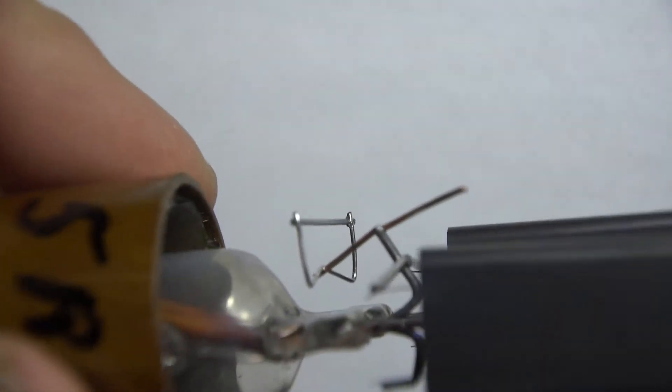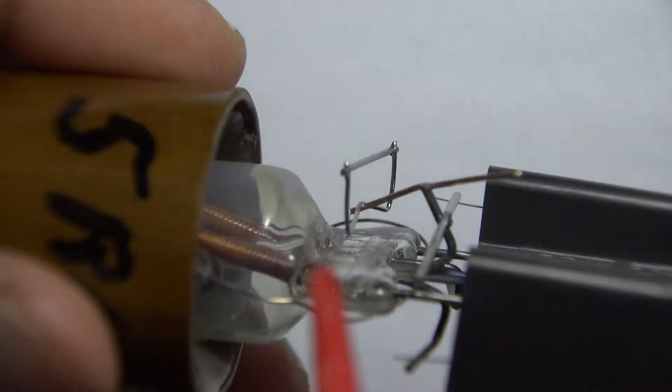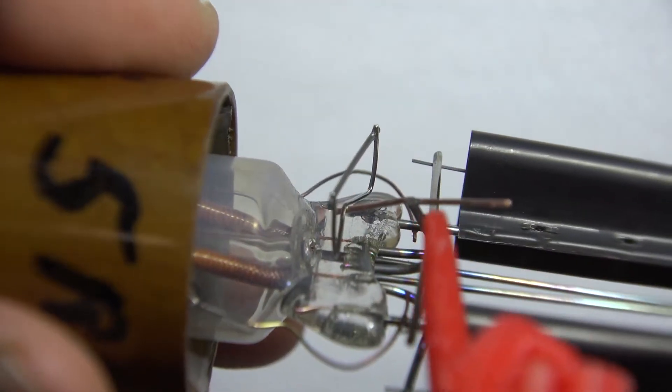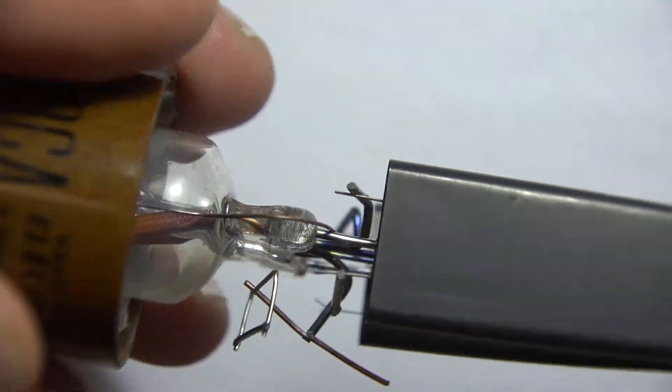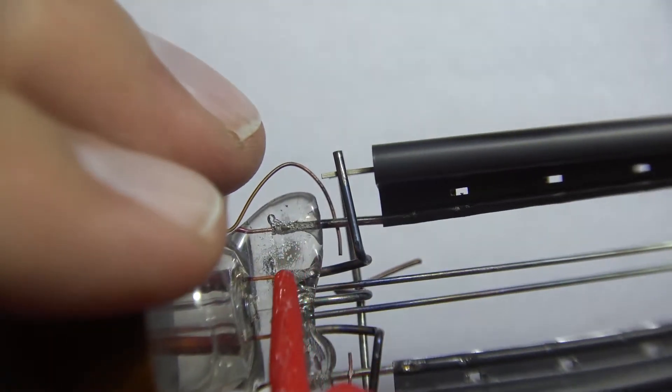You see down the bottom of the glass there's some insulated conductors underneath there. This particular rectifier has a peak inverse plate voltage of about 2800 volts.